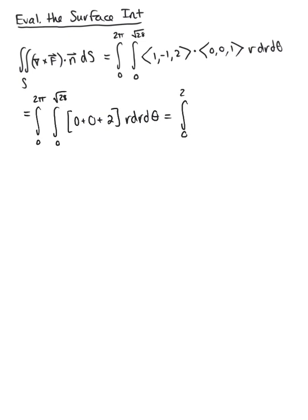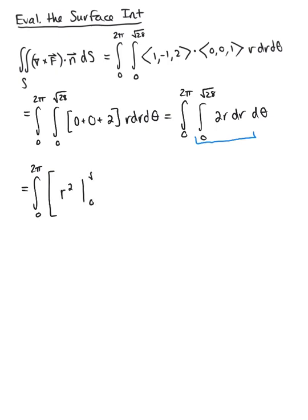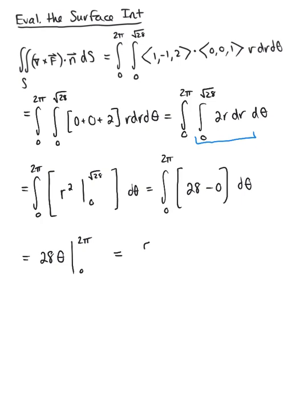This simplifies to the integral from 0 to 2pi of the integral from 0 to the square root of 28 of 2r dr dθ. Evaluating the inner integral with respect to r, the 2s cancel leaving r squared evaluated from 0 to the square root of 28, which gives us 28. So we have the integral from 0 to 2pi of 28 dθ, which gives us 28 theta from 0 to 2pi, for a final answer of 56pi.